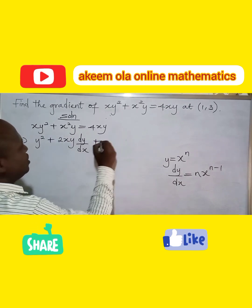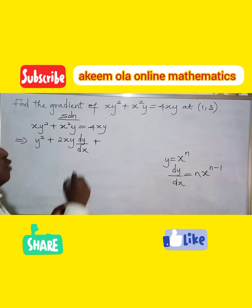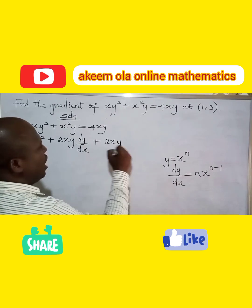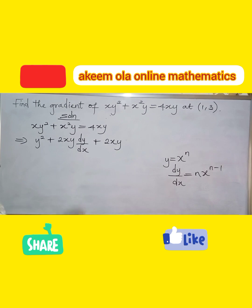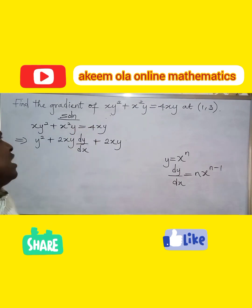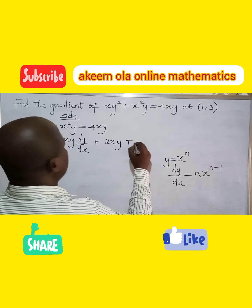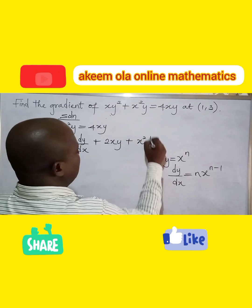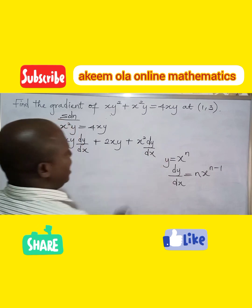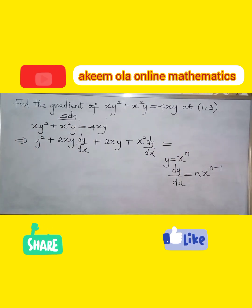For the second term, differentiating x squared y with respect to x gives 2xy, and differentiating with respect to y gives plus x squared dy/dx.